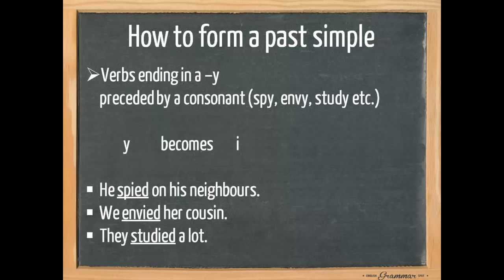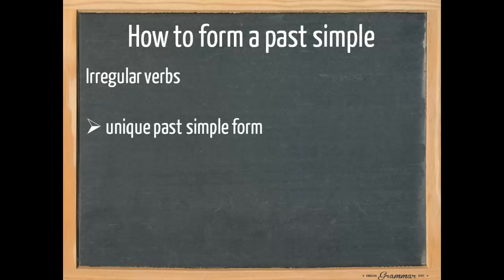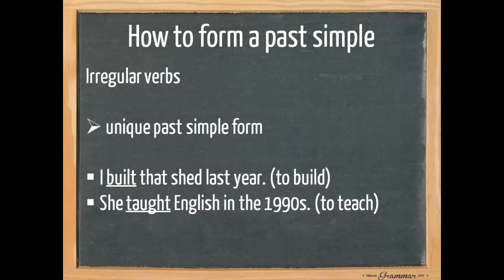Now let's have a look at the irregular verbs. All irregular verbs have a unique past simple form. I built that shed last year. The infinitive form is to build. She taught English in the 1990s. The infinitive form is to teach. We ran the marathon in 2012. The infinitive form is to run.